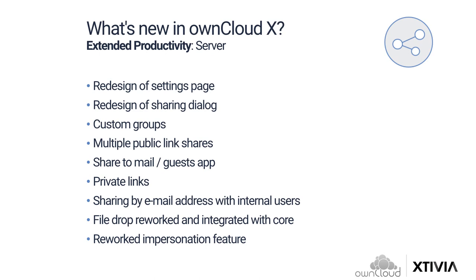With respect to custom groups, in the past only administrators were able to create groups in OwnCloud. So if you shared frequently with a group of people, you either had to add each one manually every time, or ask your administrator to create a group. With the new Custom Groups app, users are now empowered to create their own groups easily, taking pressure off admins so they can focus on what's important. Talking about multiple public link shares, previously users could only generate one public link per file. OwnCloud removed those boundaries, so now you can create as many public links as you want, with different passwords, expiration dates, and the ability to selectively revoke access.